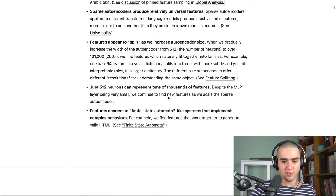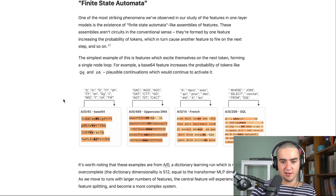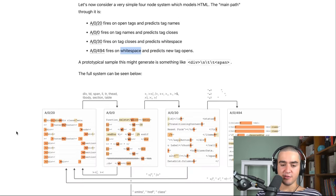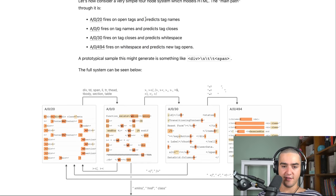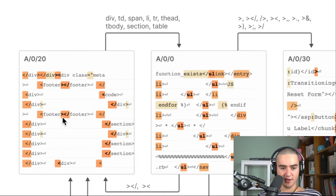So the coolest one is that features connect in a finite state automata, like systems implement complex behaviors. So here what's happening is we have all these features, like basic C4, uppercase, French, et cetera. And what's interesting is they look at different things and they also predict something else after. This was kind of difficult for me to understand at first, but let's say you have something that looks at those brackets here. And whenever this feature is triggered, there's something else in the rest of the transformer processing that says, hey, we need to look for tag name after, right? The footer thing here, or it could be a UL or whatever.